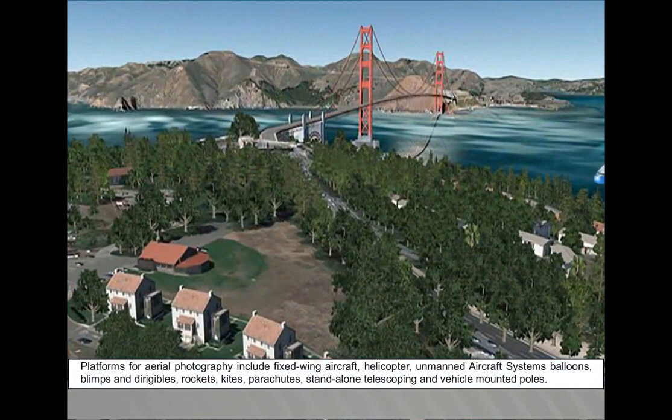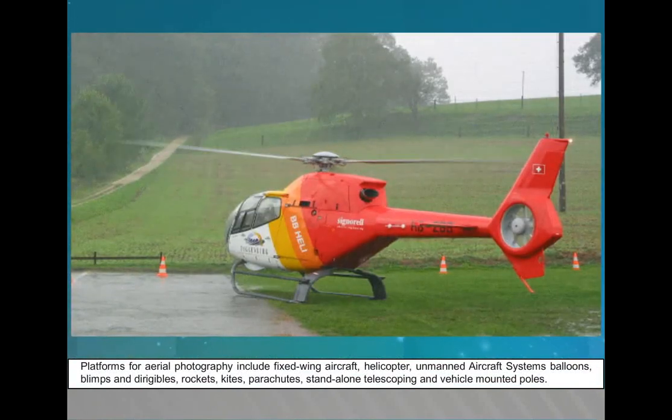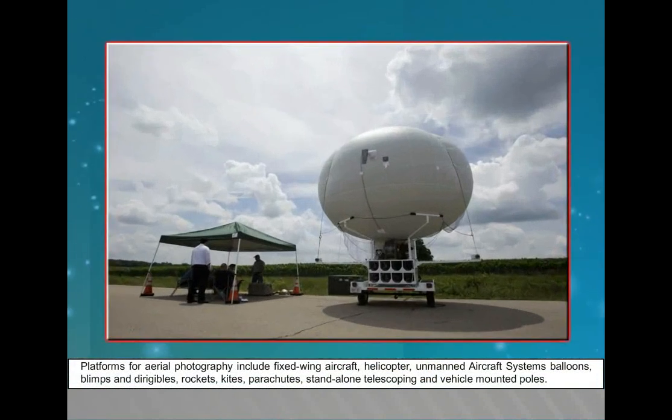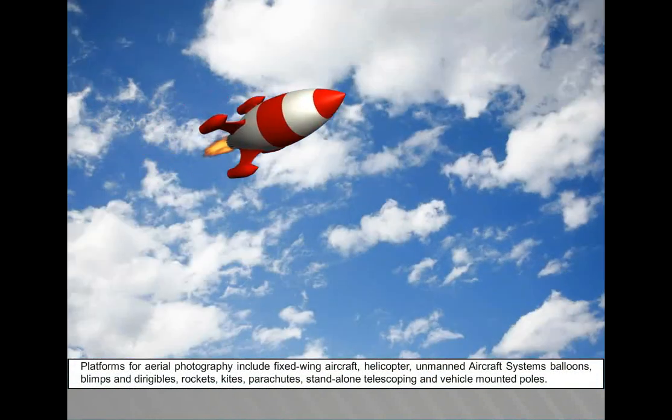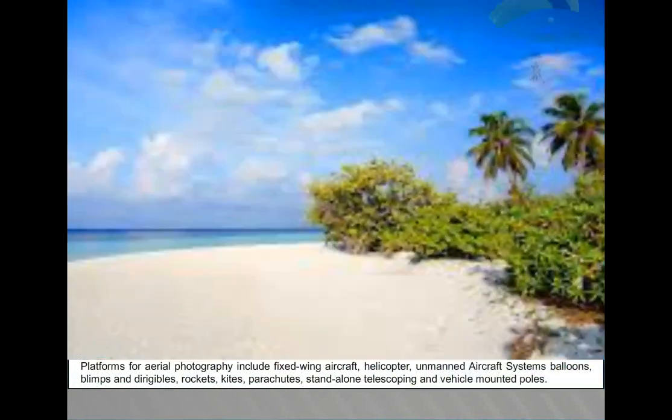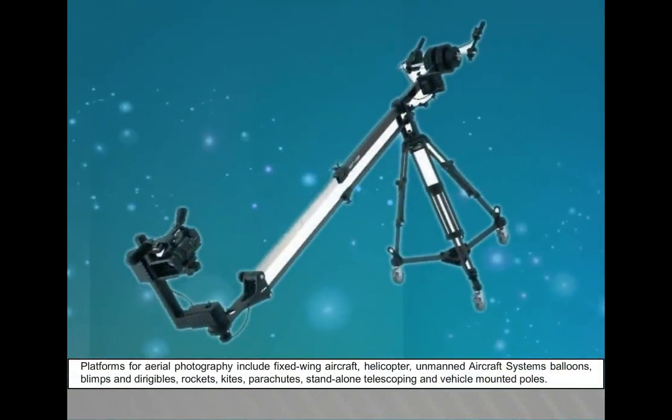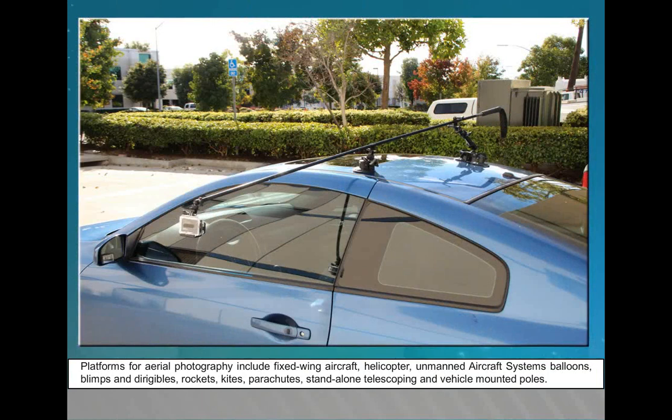Platforms for aerial photography include fixed-wing aircraft, helicopters, unmanned aircraft systems, balloons, blimps and dirigibles, rockets, kites, parachutes, stand-alone telescoping and vehicle-mounted poles.